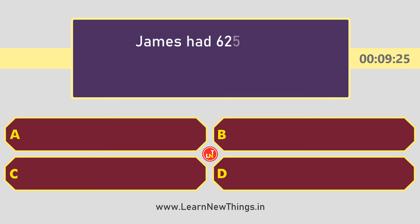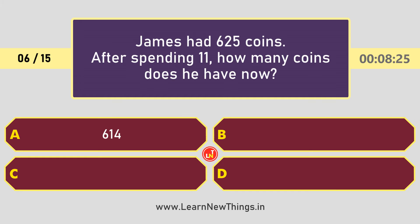James had 625 coins. After spending 11, how many coins does he have now? The answer is 614.